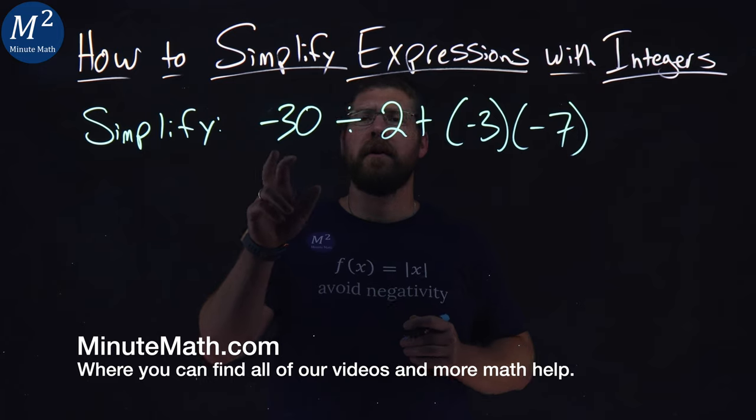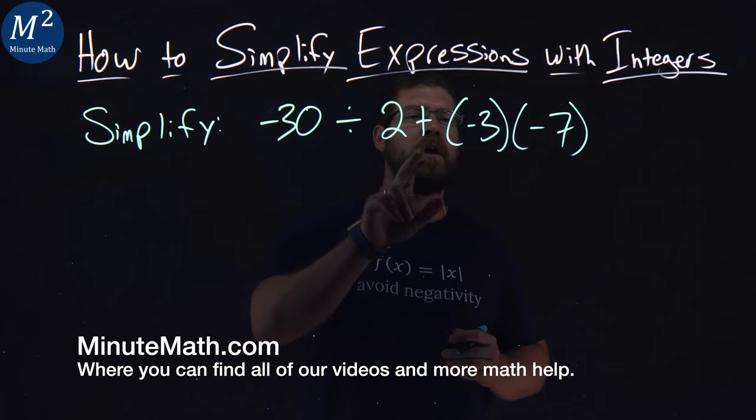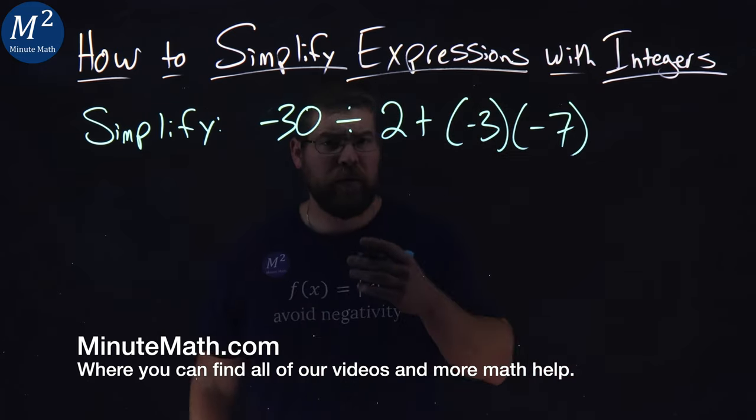We're given this problem: negative 30 divided by 2 plus negative 3 times negative 7. Let me simplify this.